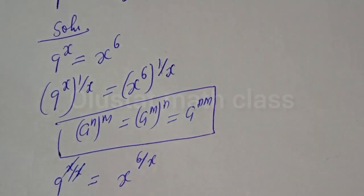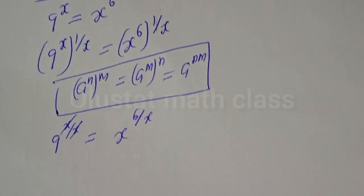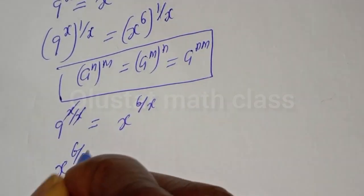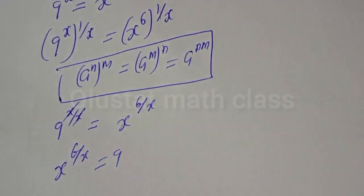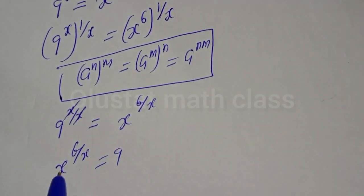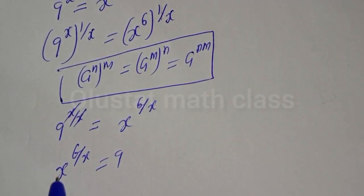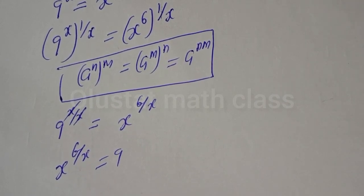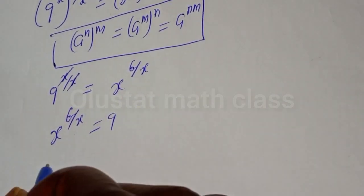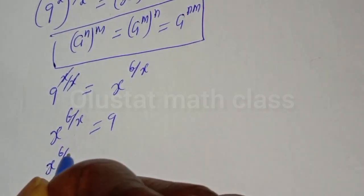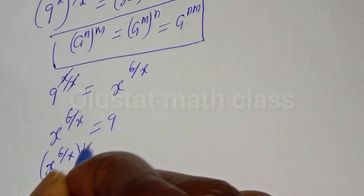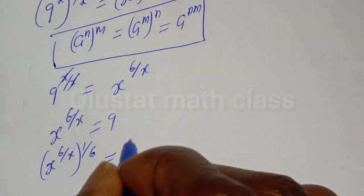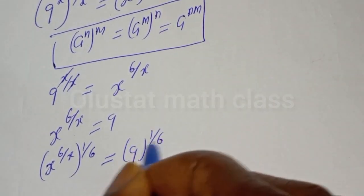This will cancel this. So s raised to power 6 over s is equal to 9. Then let's multiply the exponent of both sides again by 1 over 6. Here, s raised to power 6 over s, to the power of 1 over 6, is equal to 9 raised to power 1 over 6.